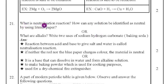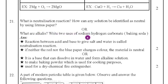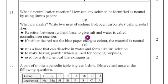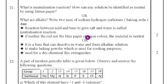Question. What is the neutralization reaction? How can any solution be identified as neutral by using litmus paper? Or what are alkalis? Write two uses of sodium hydroxide carbonate that means baking soda. Neutralization reaction means the reaction between acid and base gives salts and water that is called neutralization reaction. If how we are going to find out that is neutral or not means if neither the red nor the blue paper changes when you are dipped into the solution that paper it does not change to blue or red then that material itself it is neutral.